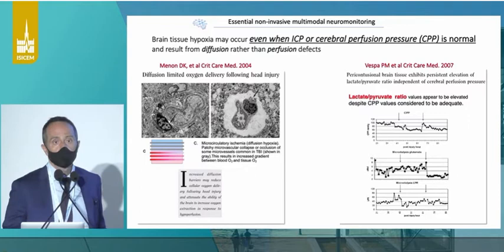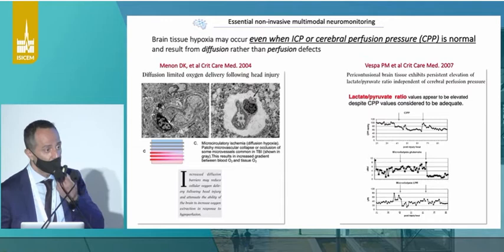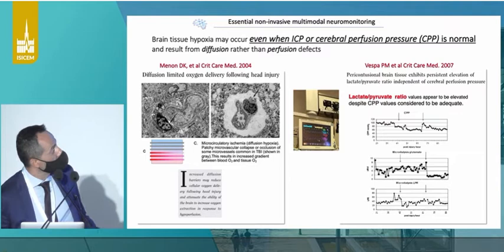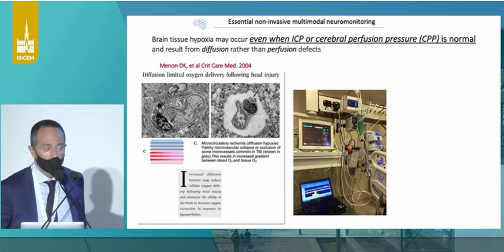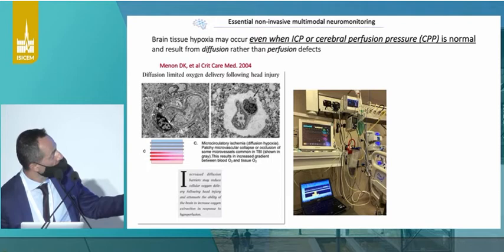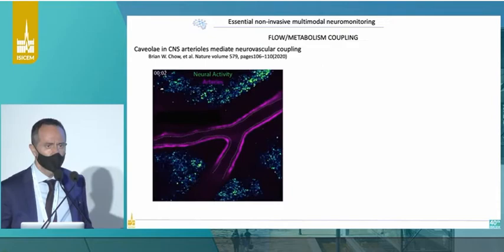We know that, for example, cerebral perfusion pressure — we can have brain ischemia and altered lactate-pyruvate ratios even in the presence of normal cerebral perfusion pressure. This is just an example of one of our patients who had a craniectomy, with normal ICP of 15. The CPP was 65. However, the patient was under the cerebral autoregulatory range. As you can see, the PbtO2, the brain tissue oxygenation parameter, was quite low. So with one single parameter, we wouldn't have captured this.